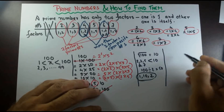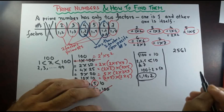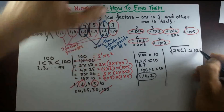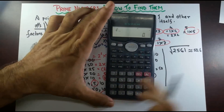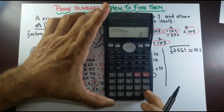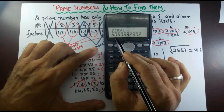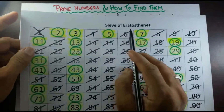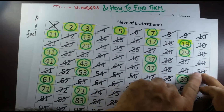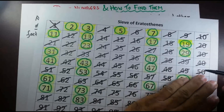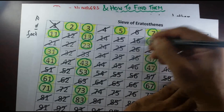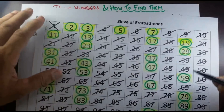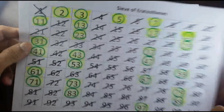Let's try with a bigger number: 2,561. If I take the square root of that, it's approximately 50.6 — we can try that with a calculator. Going back to the Sieve of Eratosthenes, all the prime numbers less than 50 are listed here. There are 15 prime numbers less than 50.